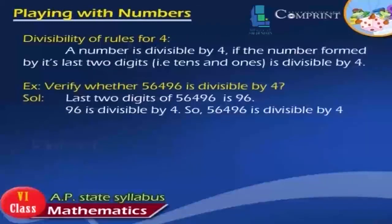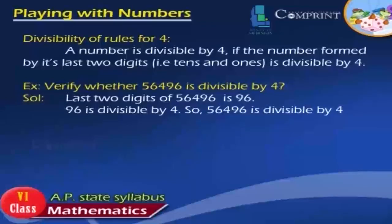Divisibility Rule for 4: A number is divisible by 4 if the number formed by its last two digits is divisible by 4. Example: Verify whether 56,496 is divisible by 4. The last two digits are 96, and 96 is divisible by 4, so 56,496 is divisible by 4.